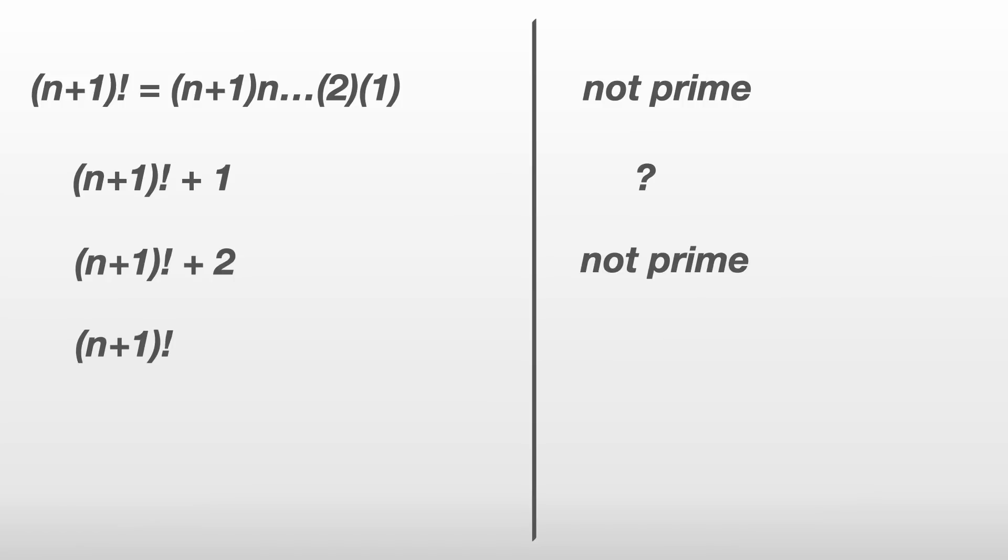Instead of n factorial, think about n plus 1 factorial. We still can't determine whether n plus 1 factorial plus 1 is prime or not, but this time we have n plus 1 factorial plus 2 to n plus 1 factorial plus n plus 1, which can be shown to be not prime. So, in total, we've now got a sequence of n consecutive composite numbers.